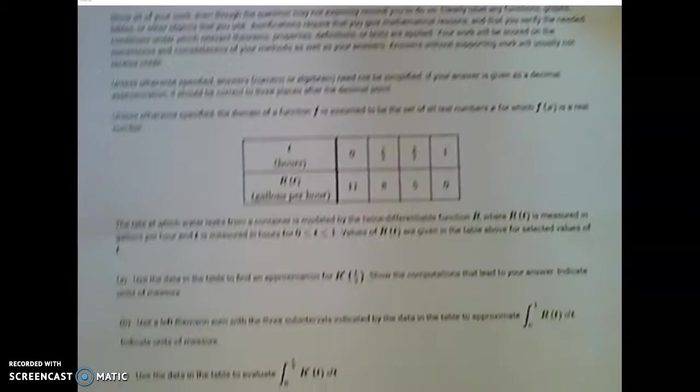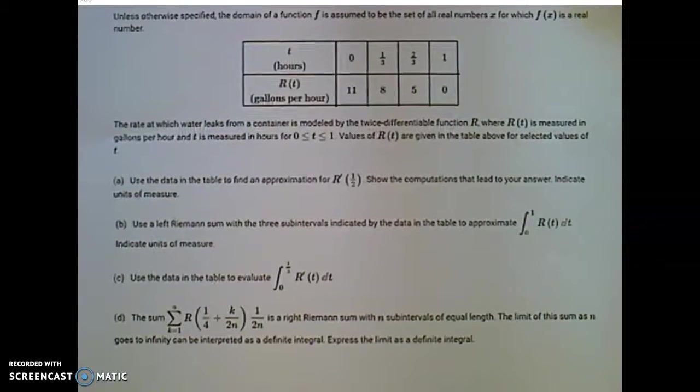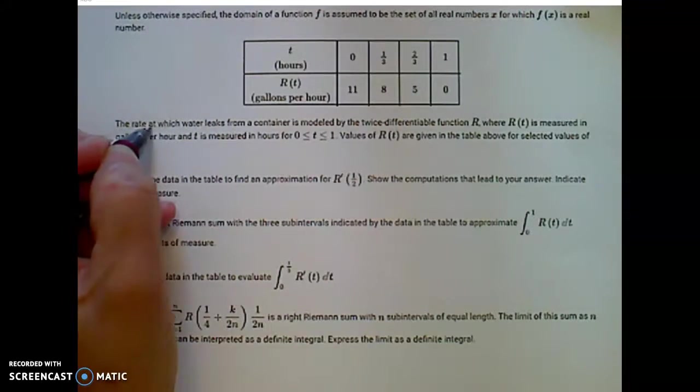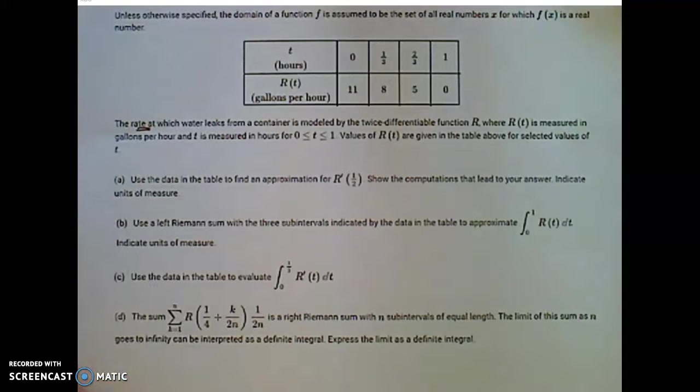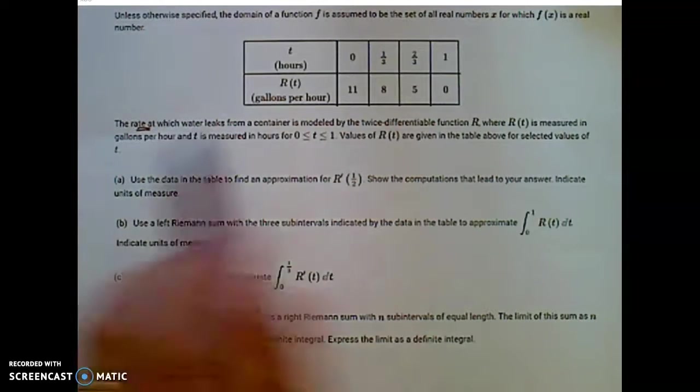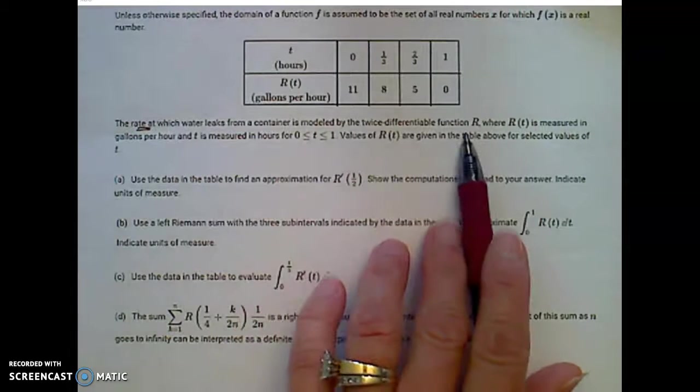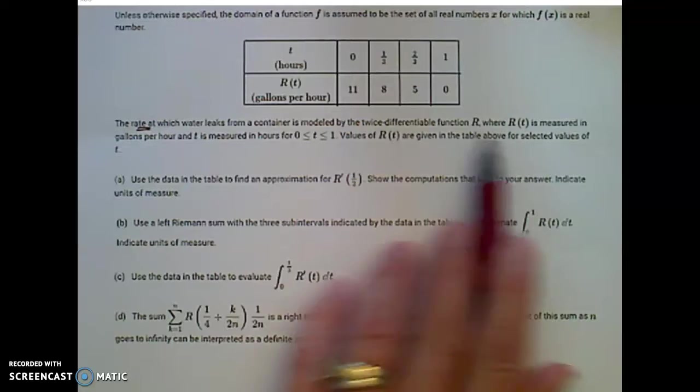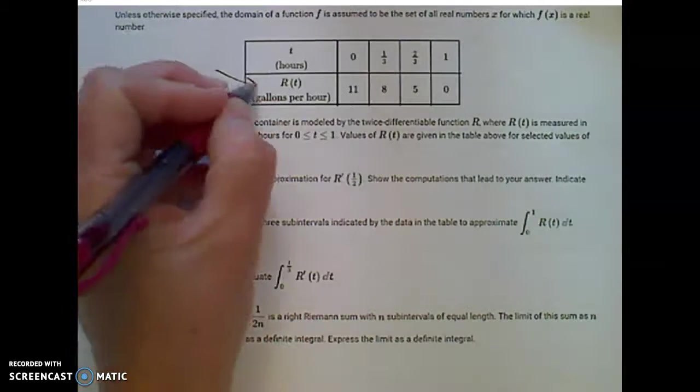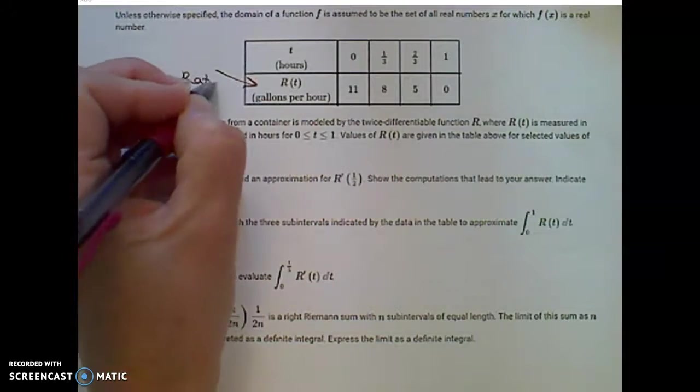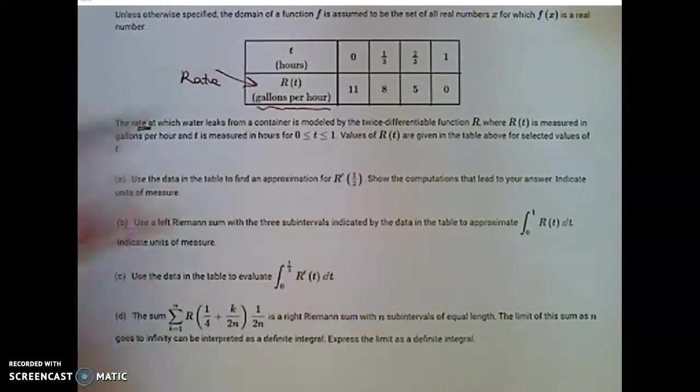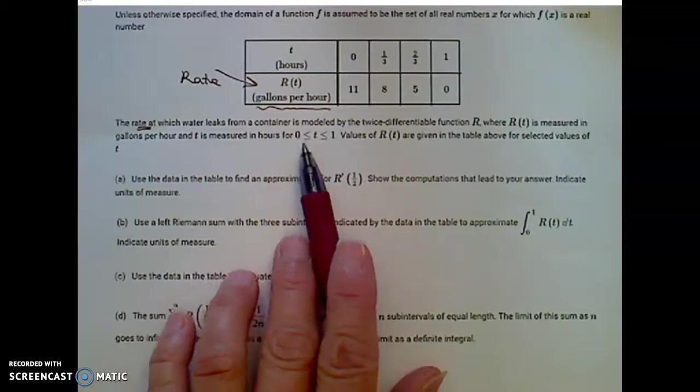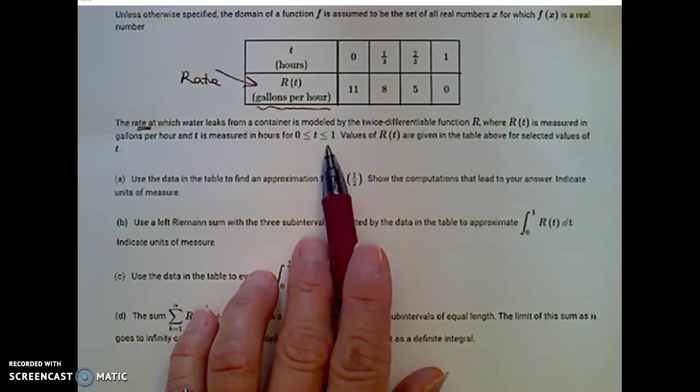We're given this table of values. Let's look carefully at this table. The table of values represents the rate at which water leaks from a container, modeled by a twice-differentiable function R, where R of t is measured in gallons per hour. Keep in mind right away that this is a rate in gallons per hour. T is measured in hours for times between 0 and 1, so that first hour.